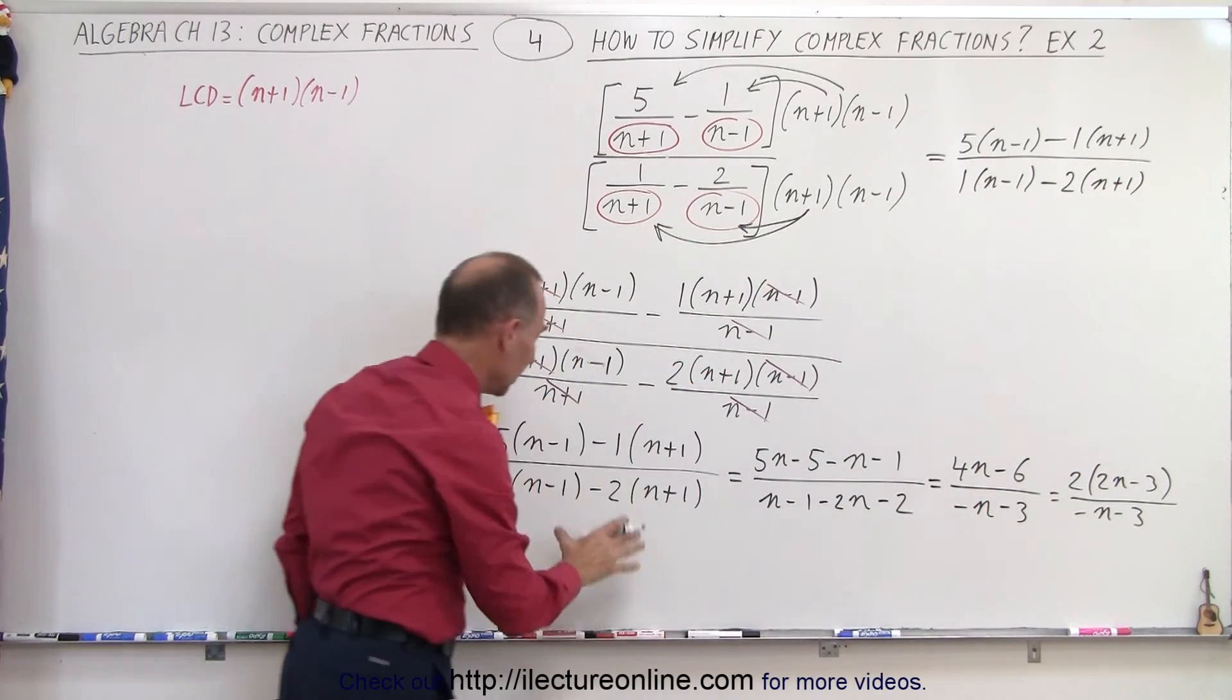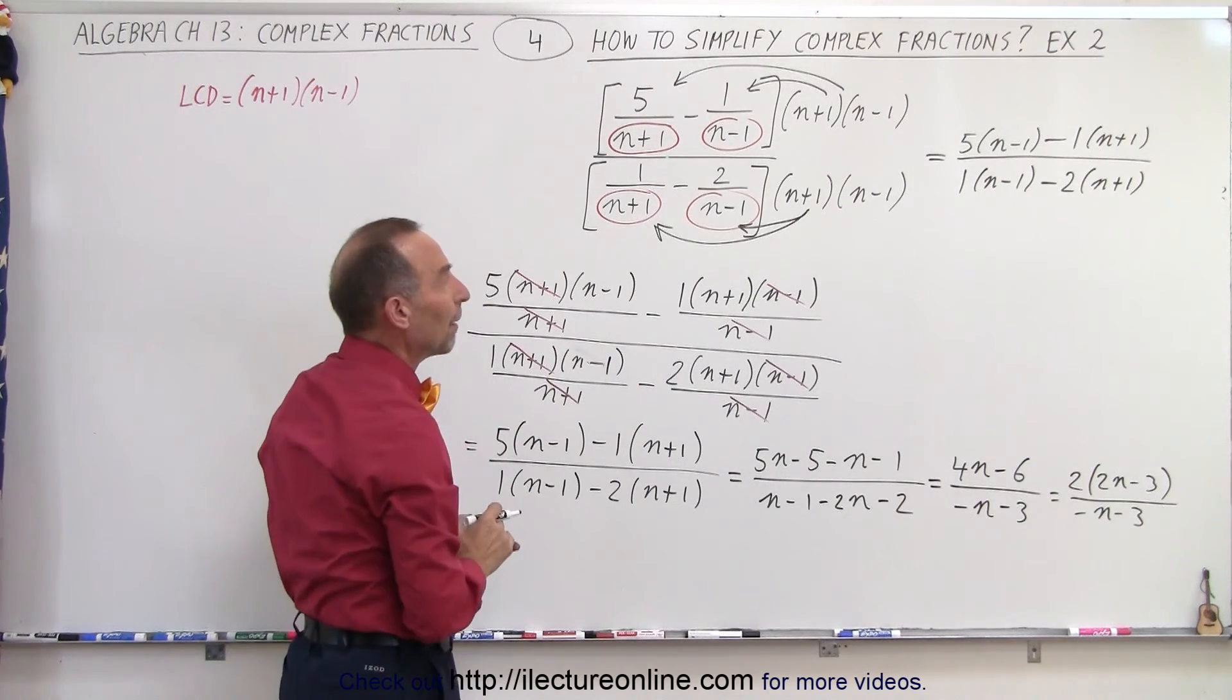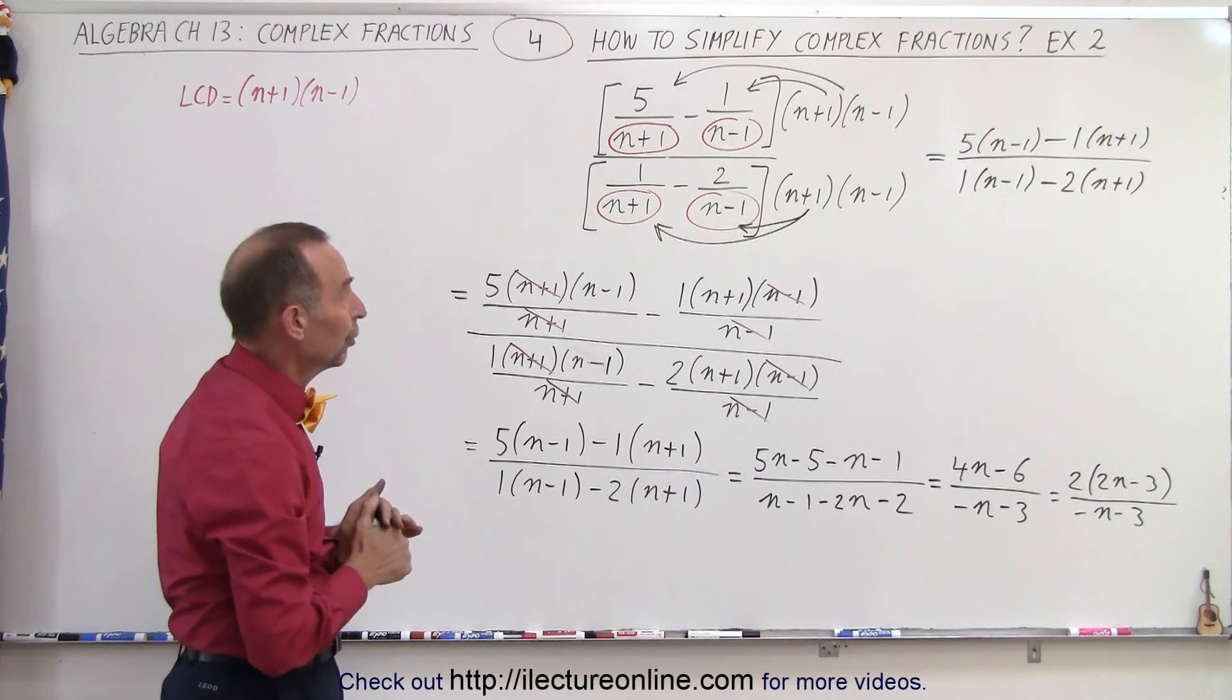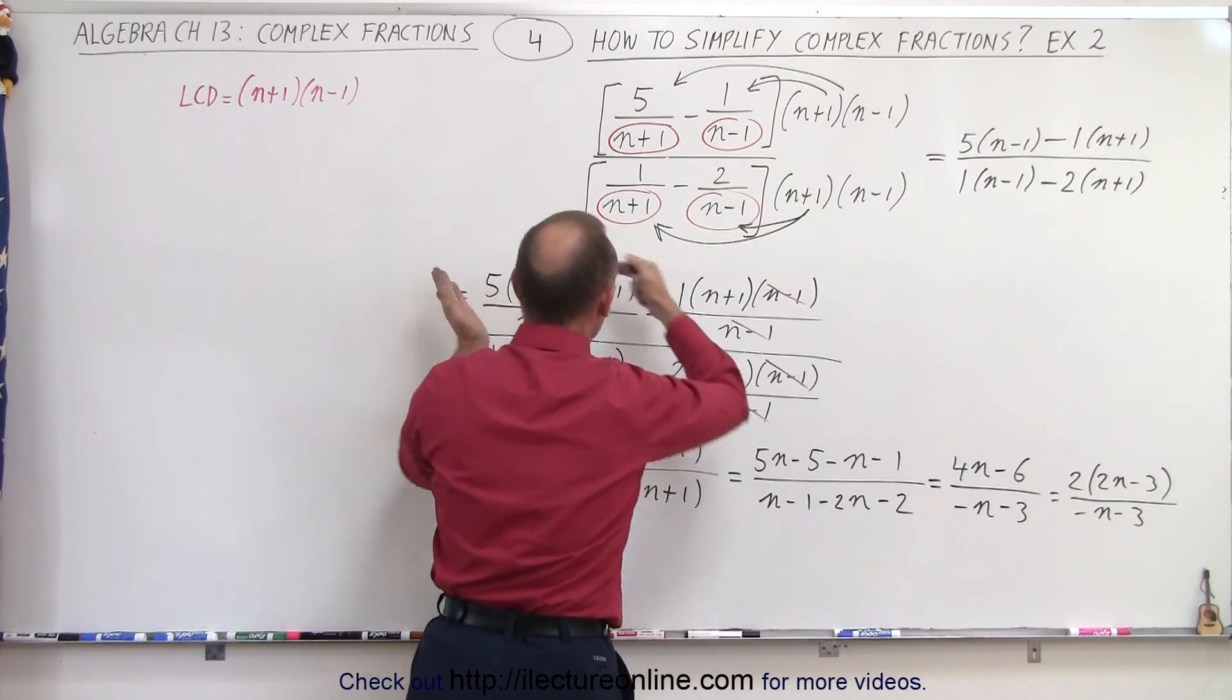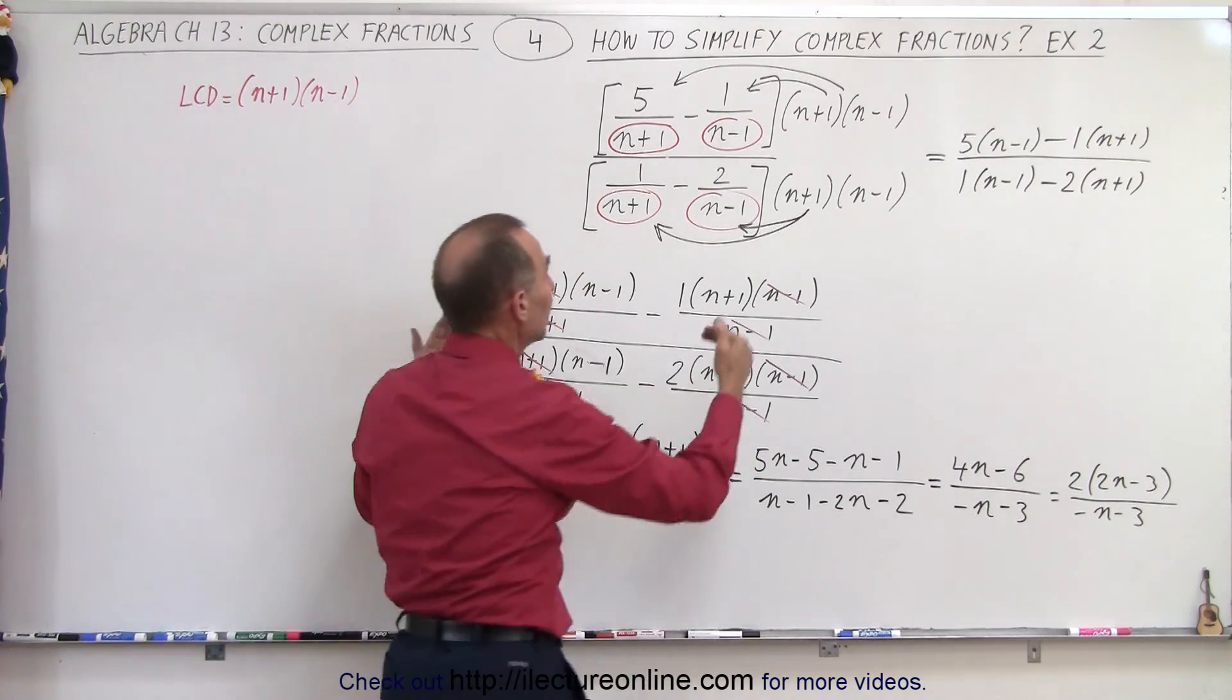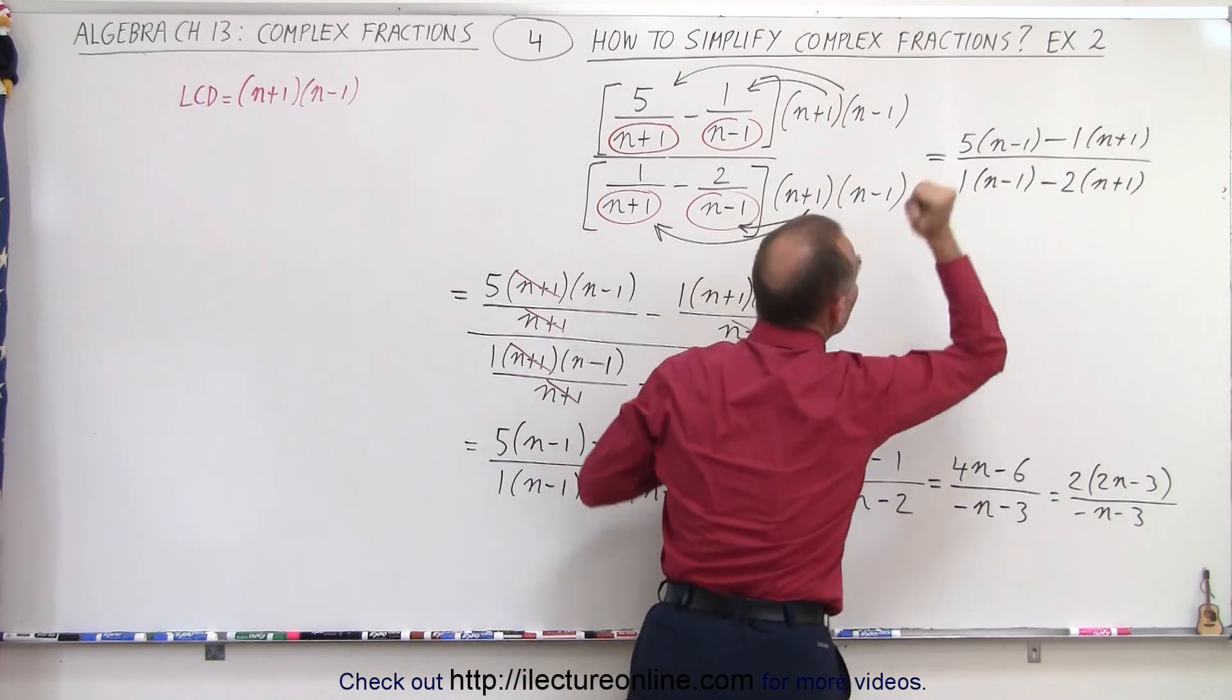Notice we end up with the exact same thing that we had over here, but we didn't need to write this intermediate step. Now, what you do here is really what you prefer. If you'd rather multiply everything out like this and write it out so it's easier to see what's canceled, by all means do it that way. If you feel comfortable and you don't need to write this step, and you can simply look at it and see what is eliminated, then go ahead and skip that step.